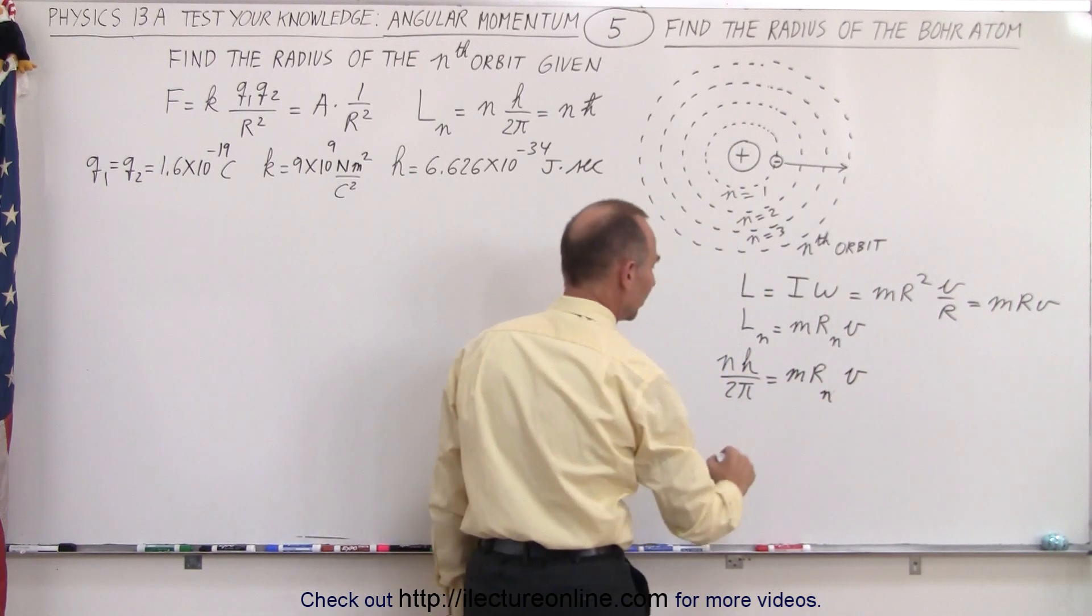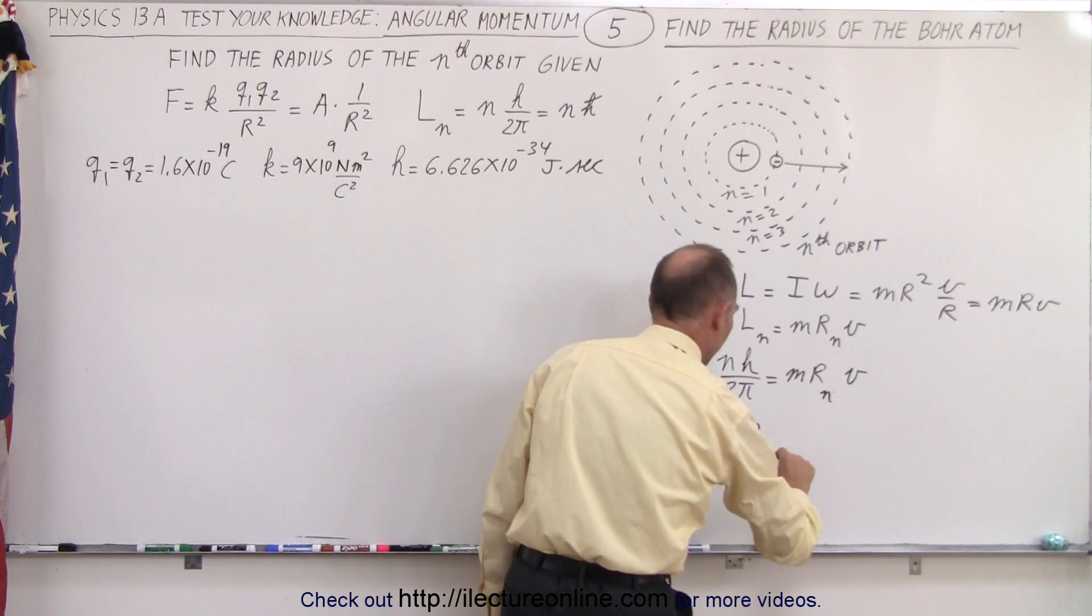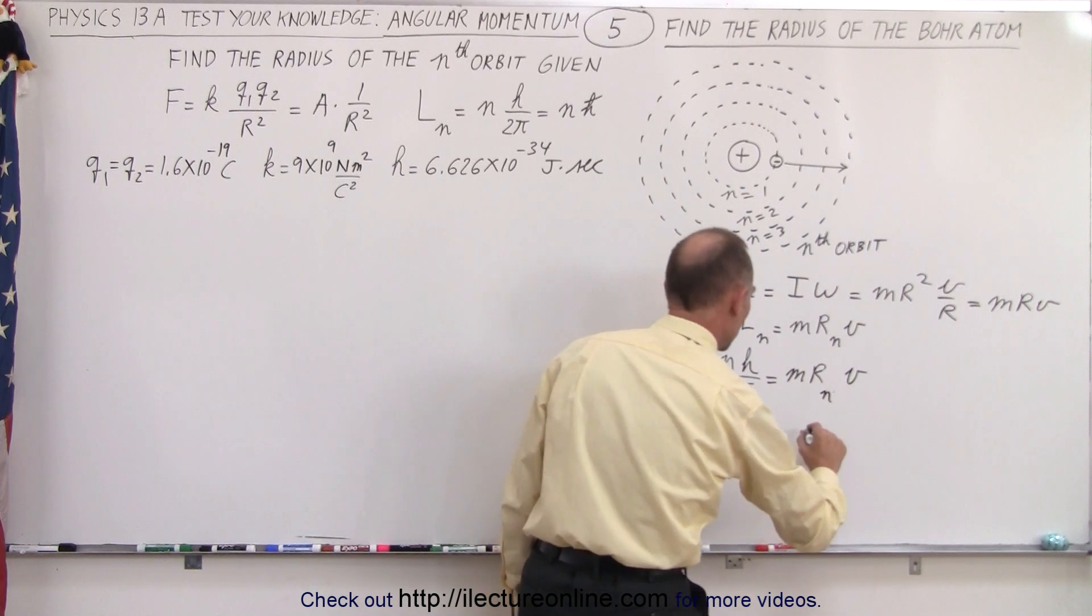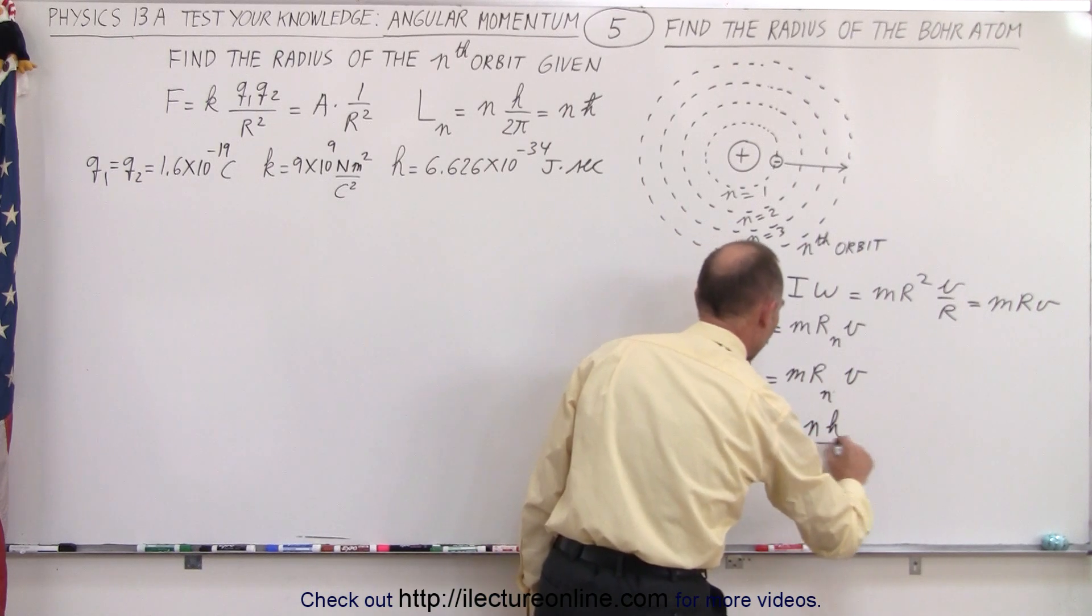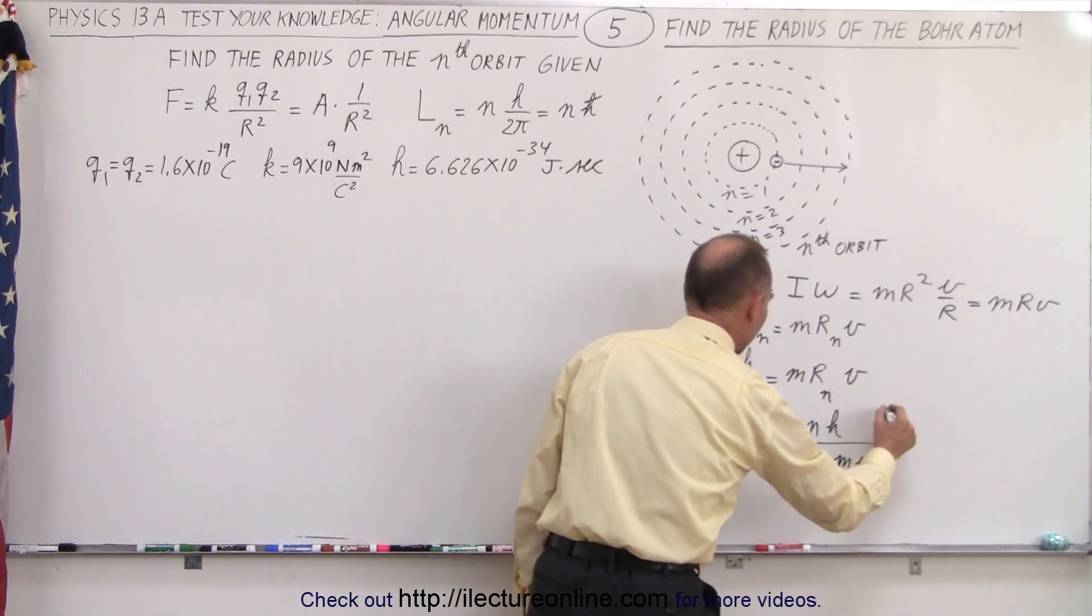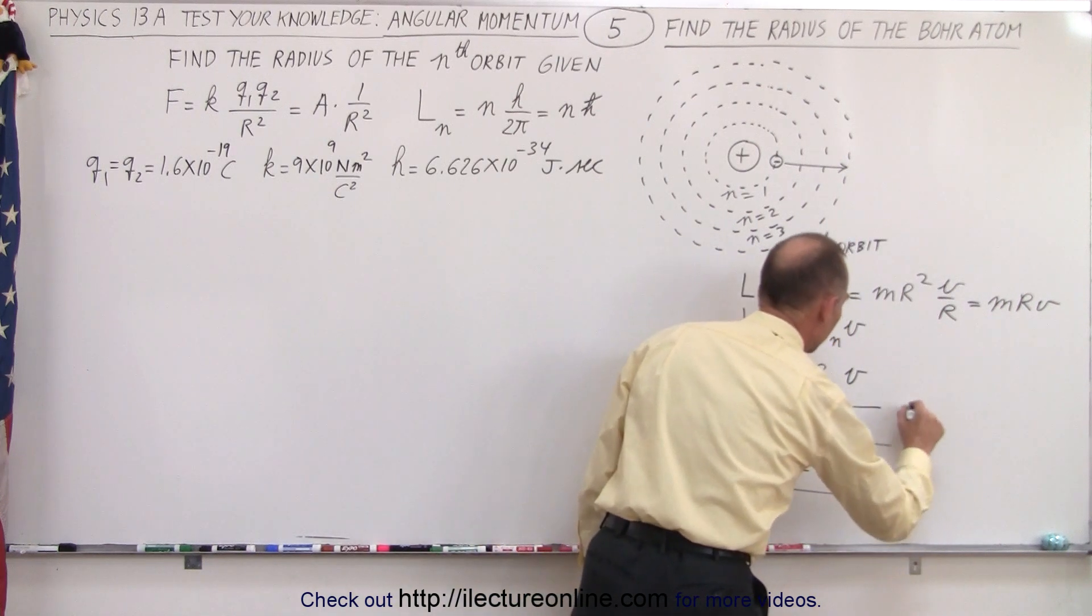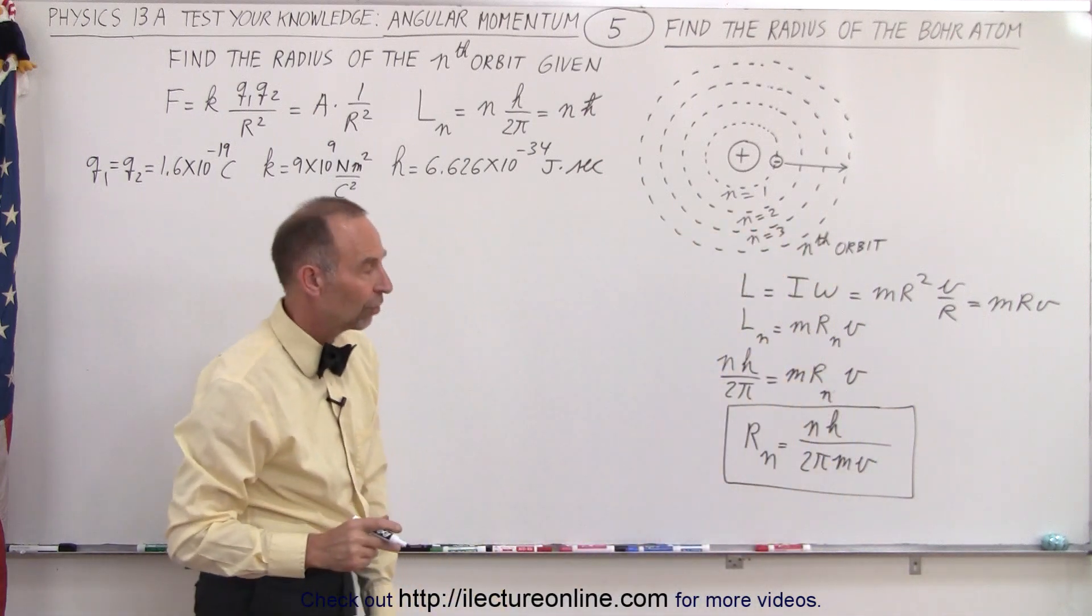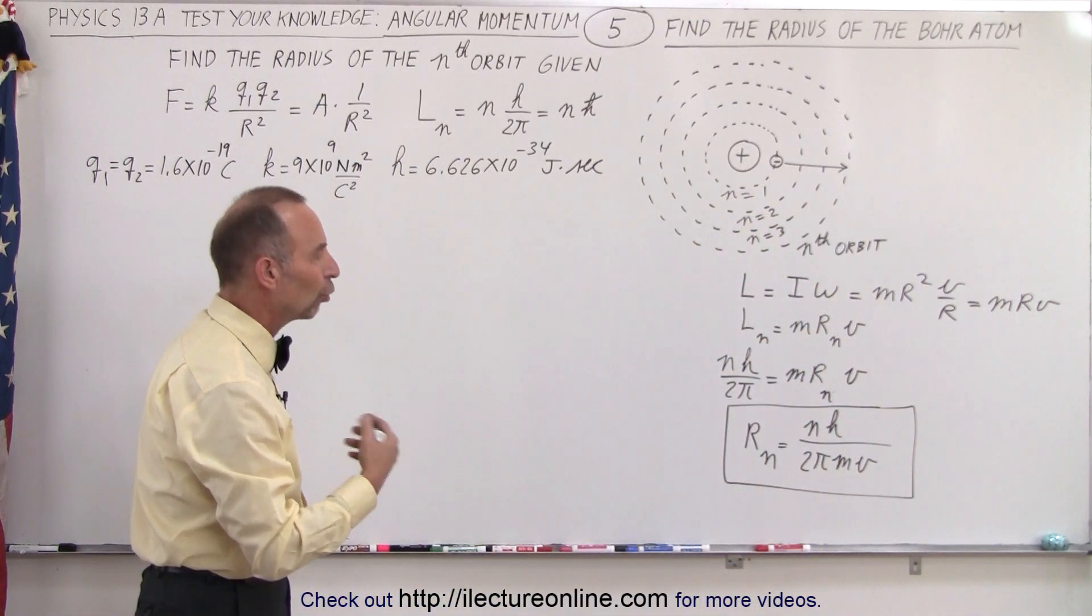If we solve this for r sub n, we can say that r sub n had to be equal to n times h divided by 2π times the mass times the velocity of the electron. So this would then be the radius of the Bohr atom for the nth orbit.